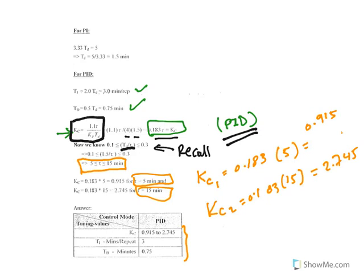The final results are: KC ranges from 0.915 to 2.745, TI equals 3 minutes per repeat, and TD equals 0.75 minutes. The tricky point is finding the KC range using the controllability parameter — refer to page 10 of this chapter. This range is the most commonly used for the controllability parameter.